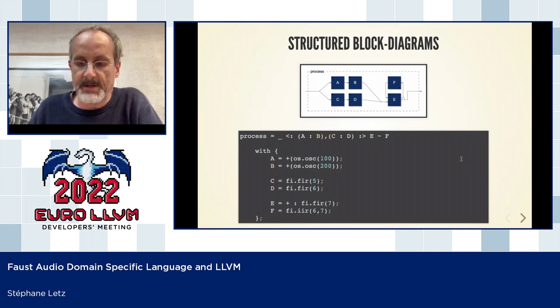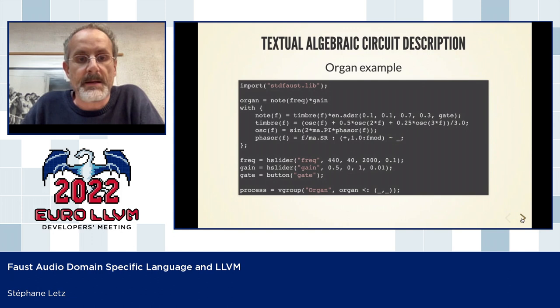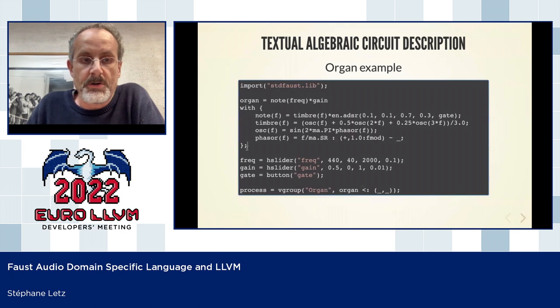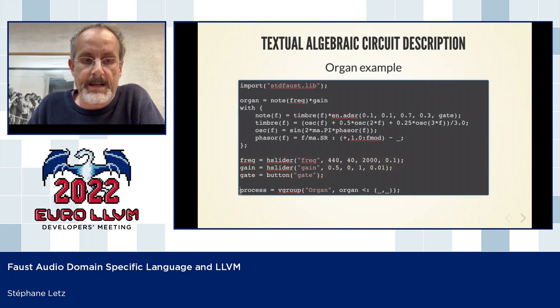Looking at a more real example: this is a NORGAN synthesizer, which does additive synthesis by adding two different sinusoidal signals — oscillators at different frequencies and amplitudes. In this piece of Faust code, you have sections describing the DSP itself, a part describing the user interface and control interface in an abstract way using sliders and buttons, and at the end the process line which connects everything to produce a working program.